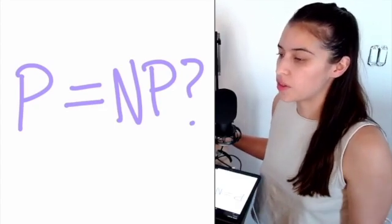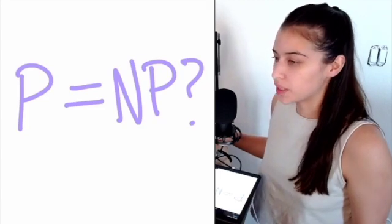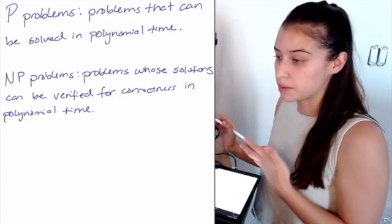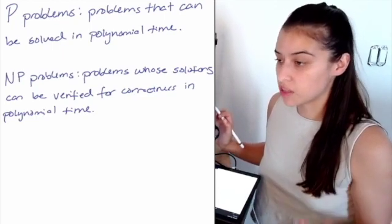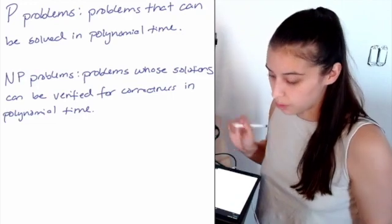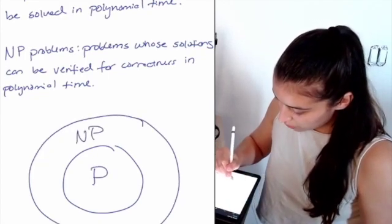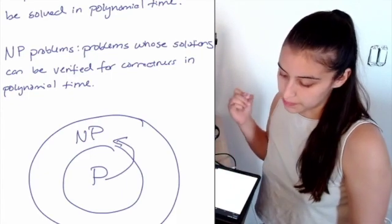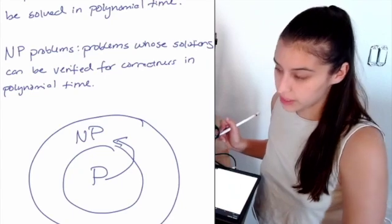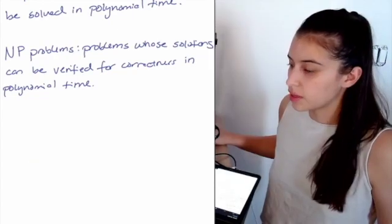The P versus NP problem asks whether every problem whose solution can be quickly verified for correctness can also be solved quickly. By quickly, we mean in polynomial time. P problems are a set of problems that can be solved in polynomial time, and NP problems are problems whose solutions can be verified for correctness in polynomial time. We know for sure that P problems are part of NP, because if we can solve a problem in polynomial time, we can also verify the solution in polynomial time.